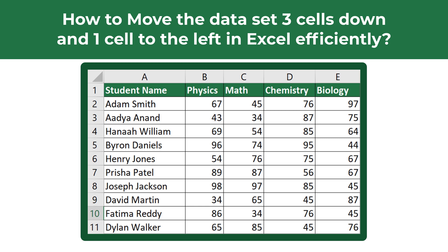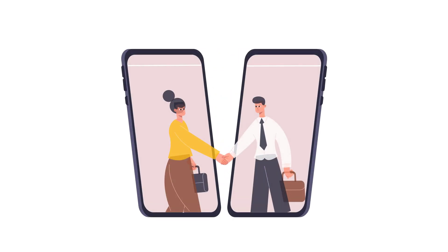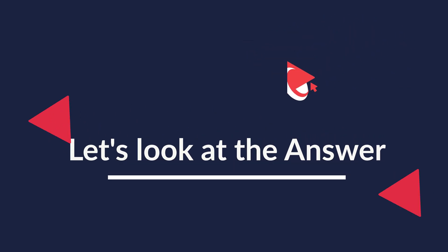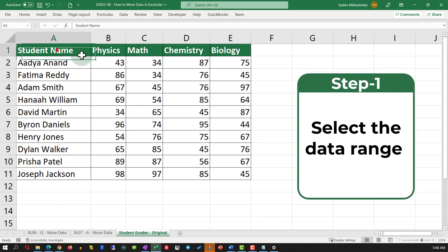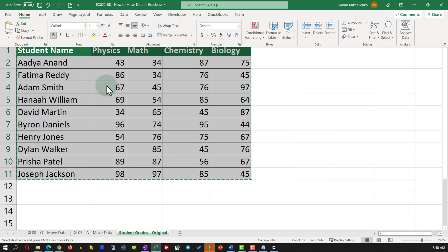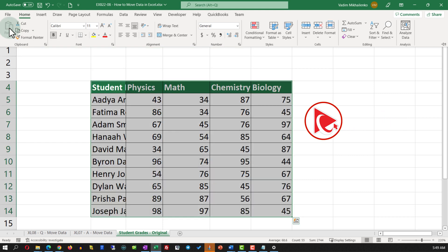You're presented with the data set of student names containing names of the students as well as their grades in physics, math, chemistry, and biology. Obviously there are multiple ways to move the data in Excel. One of the easiest ways is to select the data set and then in the Home tab use the Cut function, identify the new location by putting the cursor in the upper-left corner of the new location, and pasting the data there.